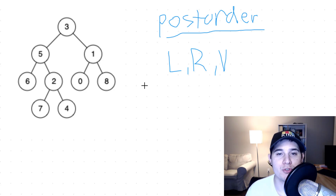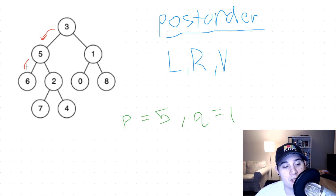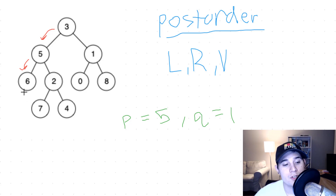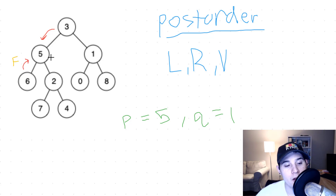If we determine that a subtree does include both P and Q, then we've found our answer. Let's go over an example where P equals five and Q equals one. We start at node three and do a post-order traversal, going left, left again, and left again from six — but that's null. We go right at six, but that's null. So we visit six, and since node six is not equal to five or one, we return false from this recursive call. From node five, we then go right to two.